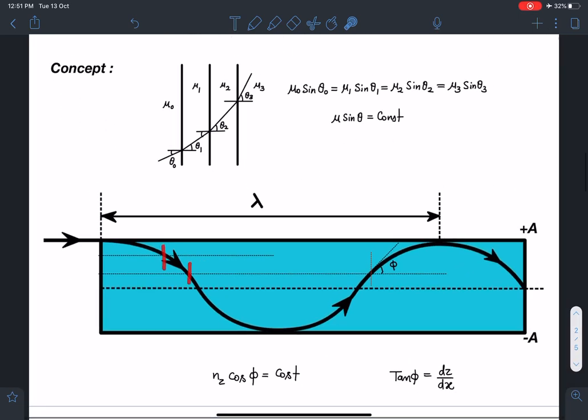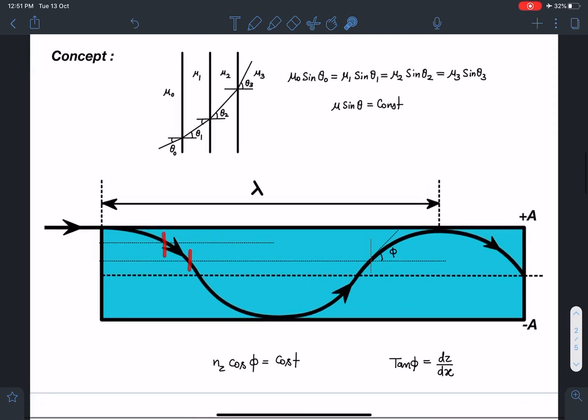As this light ray will enter here, we need in order to use this logic mu sin theta equal to constant where theta is angle made by the normal. So I am considering this angle as phi here. This is the angle made by the tangent with the x axis. So with the normal everywhere it is going to make angle of 90 minus theta.